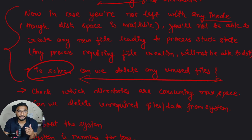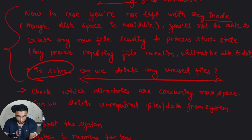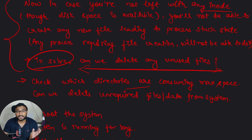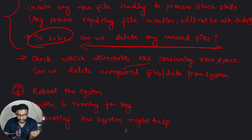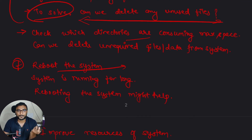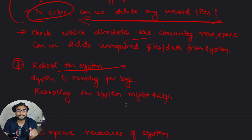To resolve inode exhaustion, delete unused files. Browse your directories, identify what data is not required, and remove it — this frees up inodes and can improve performance. If all else fails, the last resort is to reboot the system. Rebooting creates a fresh system state and can help clear unwanted processes or configurations that are degrading performance.